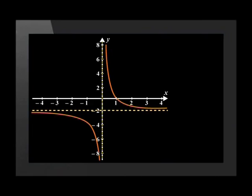Because an asymptote is an imaginary line which doesn't really exist, we use a dotted line to show it. You will remember from grade 10 that the hyperbola and exponential graphs had asymptotes. The hyperbola and exponential graphs approach and get very close to the asymptote, but they never touch it or cross it.